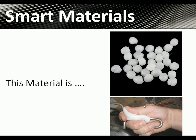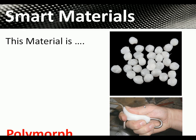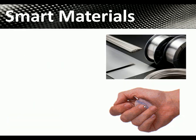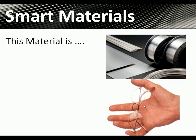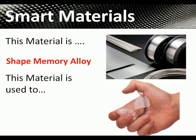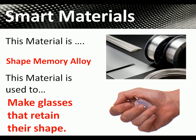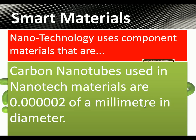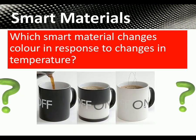Now for questions. This material is polymorph, used to form ergonomic hand grips. This material is shape memory alloy, used to make glasses that retain their shape. Nanotechnology uses component materials that are 0.000002mm in diameter — carbon nanotubes used in nanotech materials are absolutely tiny, nearly molecular in thickness.